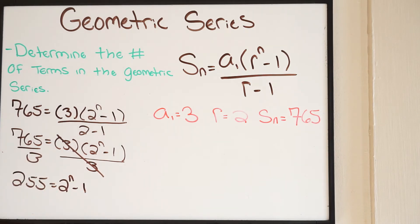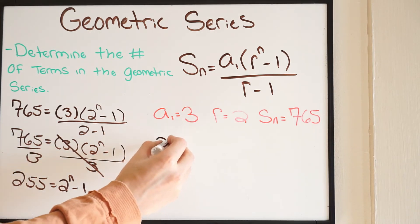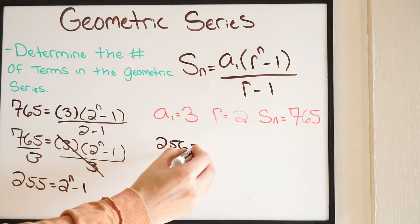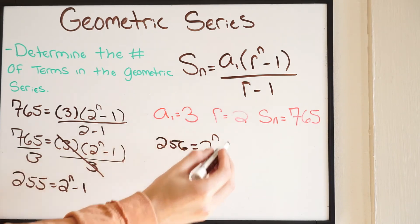So we get 255 equal to 2 to the N minus 1. Let's go ahead and get rid of this negative 1. We're going to add 1 on both sides. So now we get 256 equal to 2 to the N.